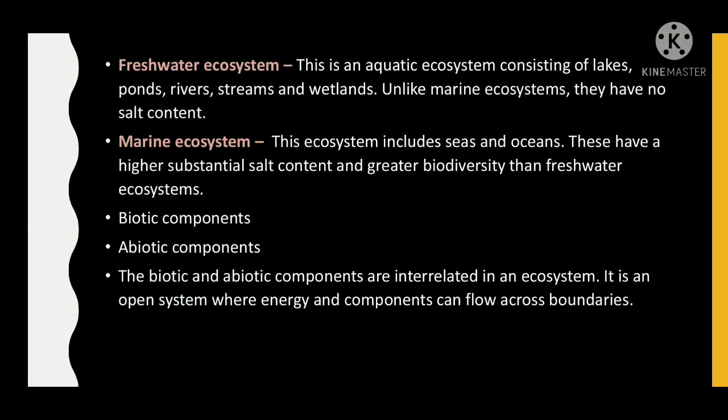Freshwater ecosystem is an aquatic ecosystem consisting of lakes, ponds, rivers, streams and wetlands. Unlike marine ecosystems, they have no salt content. Marine ecosystems include seas and oceans. These have a higher substantial salt content and greater biodiversity than freshwater ecosystems.